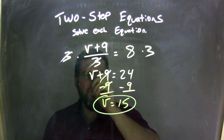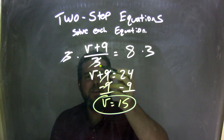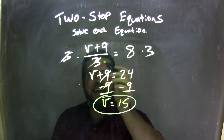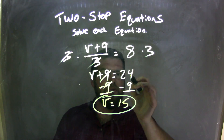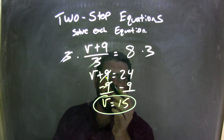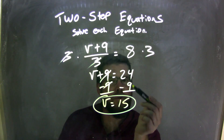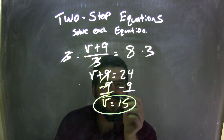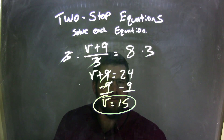Let's recap. We started with v plus 9 over 3 equals 8. The opposite of division by 3 is multiplication, so I multiplied both sides by 3. That cancels out the 3 in the denominator, leaving v plus 9 on the left equals 8 times 3, which is 24. Then I had a plus 9 — opposite of addition is subtraction — so I subtracted 9 from both sides. The 9s cancel, leaving v on the left, and 24 minus 9 is 15, giving my final answer of v equals 15.